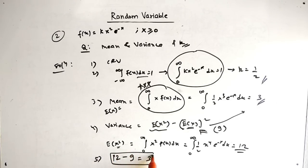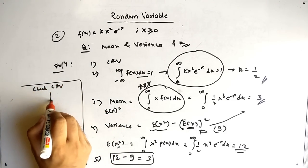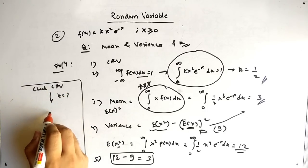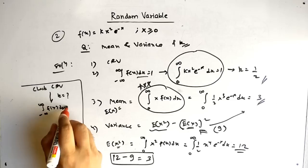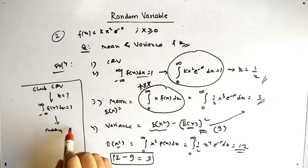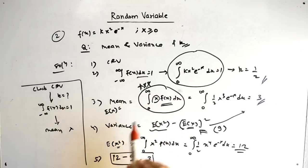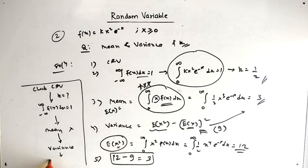So the variance is E(x²) minus [E(x)]² equals 24 minus 9, which gives variance equals 3 wait — let me clarify the flow: check continuous random variable, then find k using the integral formula equals 1, then find mean by multiplying x into f(x) and integrating, then find E(x²) by multiplying x² into f(x) and integrating, then compute variance to get the final answer.